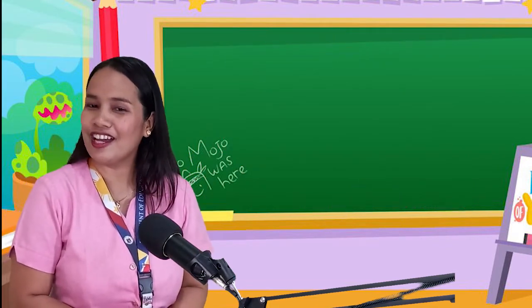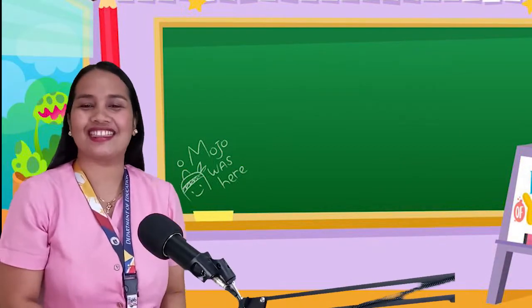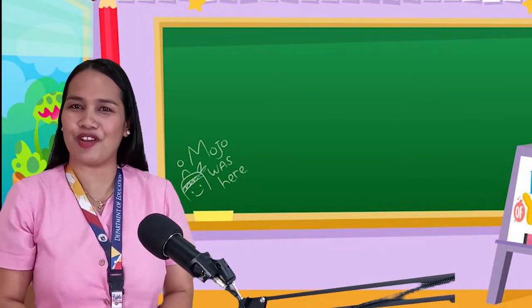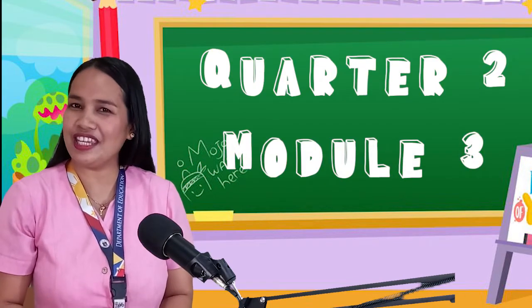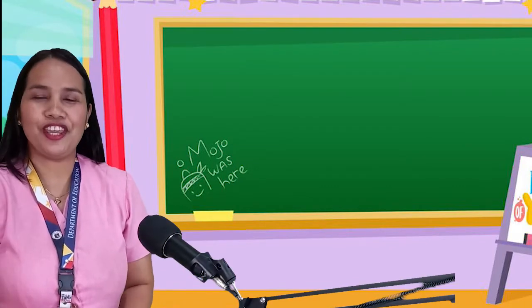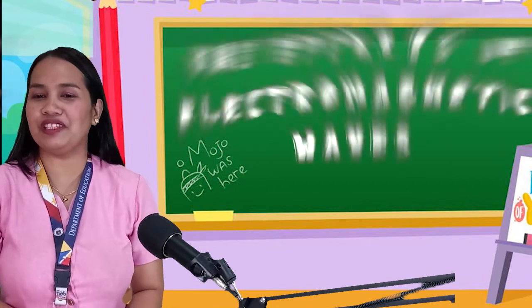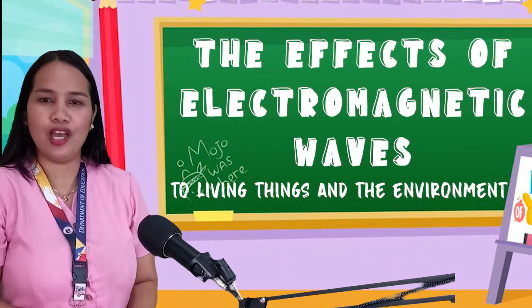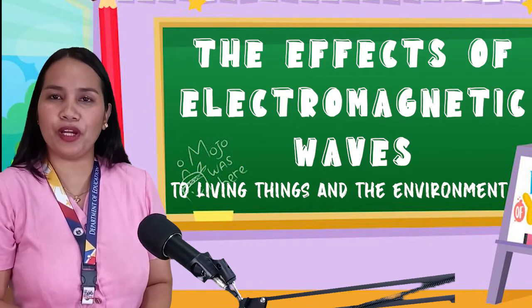Are you ready now? That's great! At this moment, let's take a look at your Science Module, Grade 4-2 Module 3. Do you have any idea about the topic? Great! Happy to know that you still have knowledge about it. Here we go! Our topic today is about the effects of electromagnetic waves on living things and the environment, which is based on the most essential learning competencies of the Department of Education.